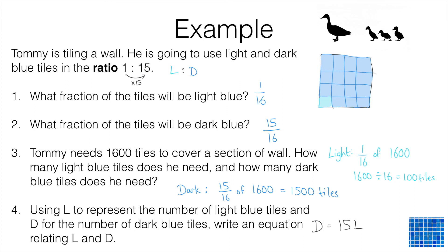That's not the only possible correct answer. What you could do is have thought about it in this sense. The number of light tiles is actually 1 fifteenth of the number of dark tiles. What you're doing to find the number of light tiles is effectively dividing the number of dark tiles by 15.